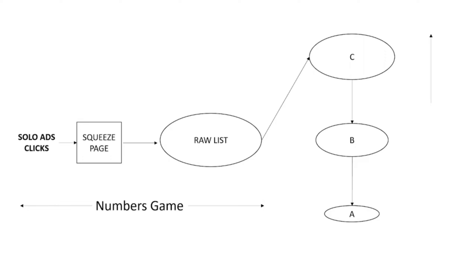However, when it comes to buyer's lists C, B, and A, that's where we're talking about a quality and strategic game — you need to know exactly how to promote mid-ticket and high-ticket offers, what kind to promote, how to communicate with subscribers, whether to send value emails or promotional emails, and how to provide value content. Some email marketers actually use my videos to send to their subscribers, which I really don't mind — in fact it's a win-win for both of us and for their email list subscribers.